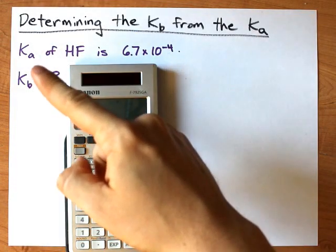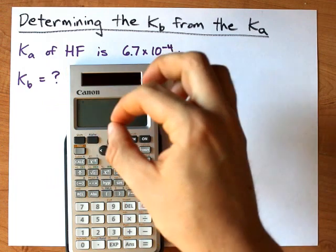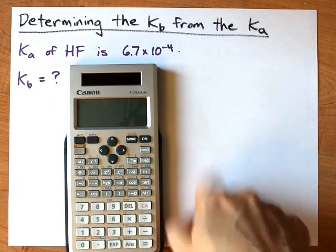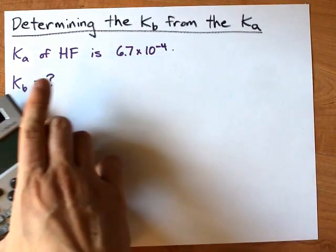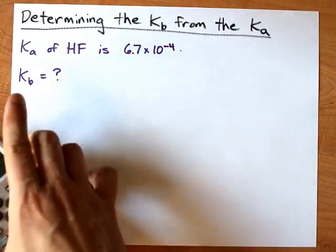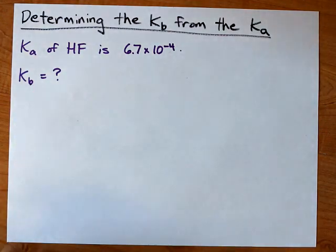Determining the KB from the KA of a weak acid is very easy and I'll even show you what we type into the calculator to make it happen. If the KA of HF is 6.7 times 10 to the minus 4, what is the KB of its conjugate base?